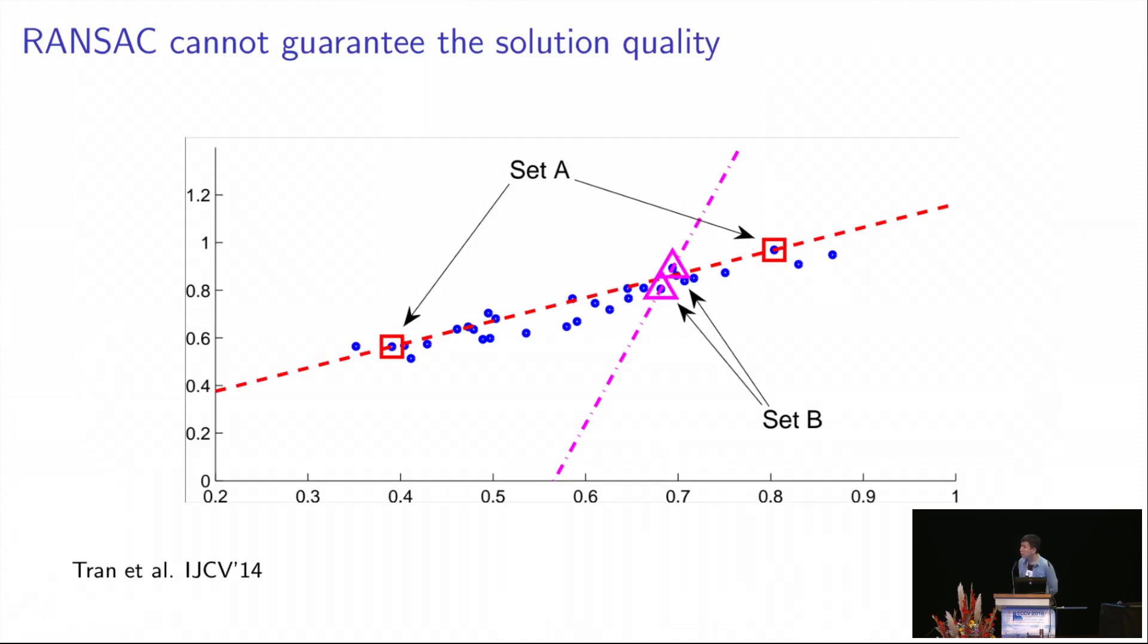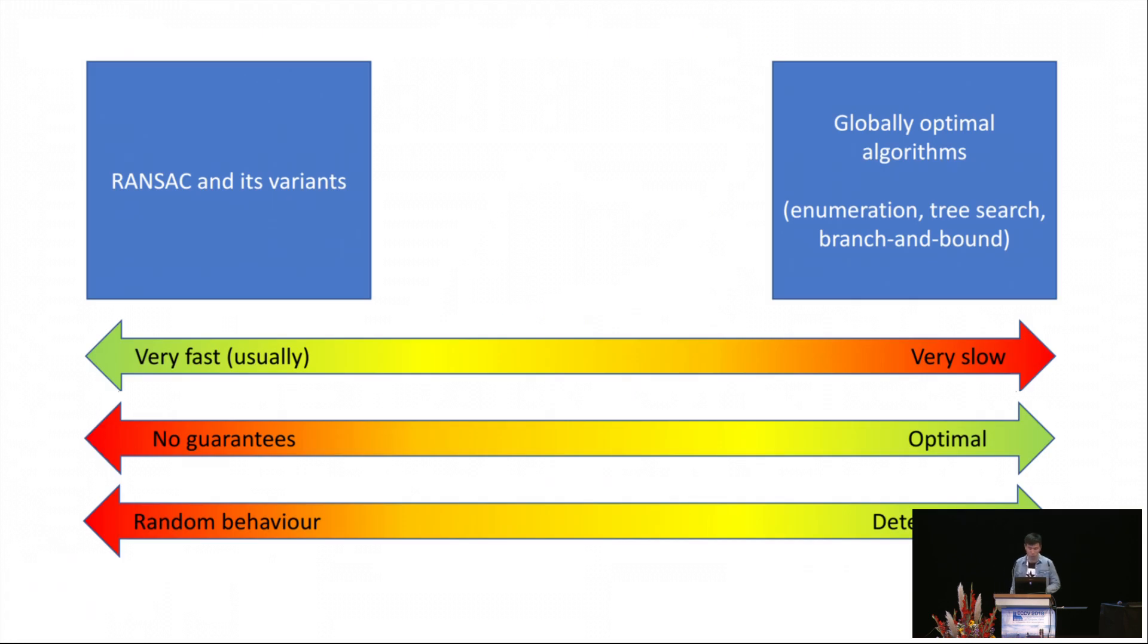Notice that although RANSAC guarantees return a full inlier subset with a certain confidence, these full inlier subsets do not always lead to a good model fitting result. As we can see in this figure, these two points in the triangles are all inliers, but the model fitting result is actually pretty bad. On the other hand, RANSAC and its variants are random heuristics, which makes their behavior hard to predict in challenging datasets.